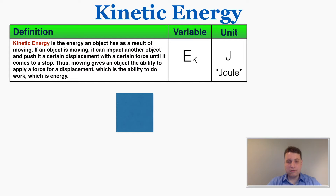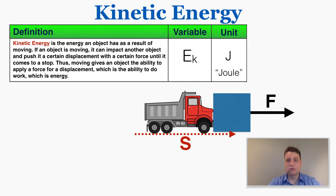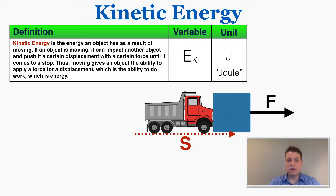So as an example, if this truck is moving with a certain velocity, when it impacts this box it can apply a certain amount of force for a certain amount of displacement. We don't know exactly what force or displacement right now, but we know it has that ability to apply some force for some displacement, so it must have some energy because it is moving. The energy that an object has because it is moving is kinetic energy.